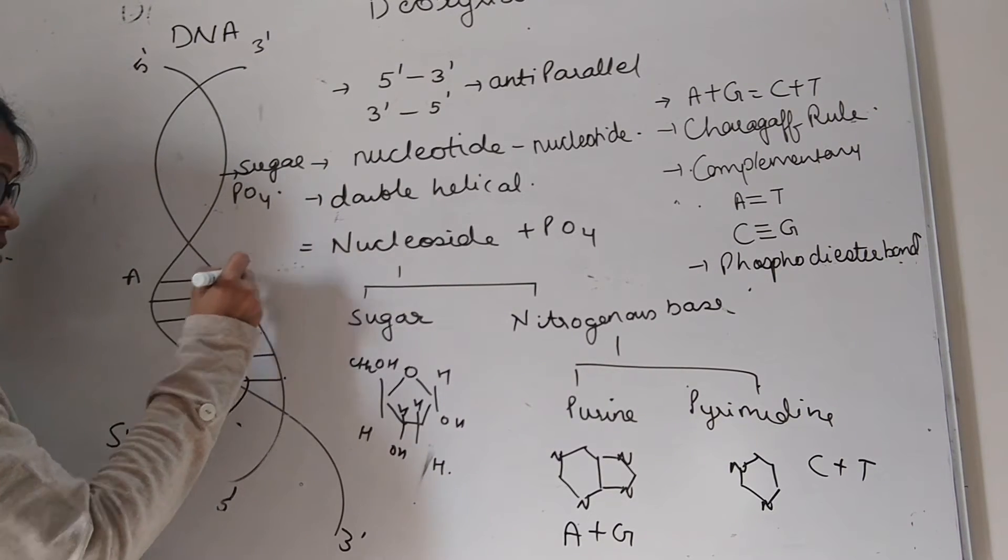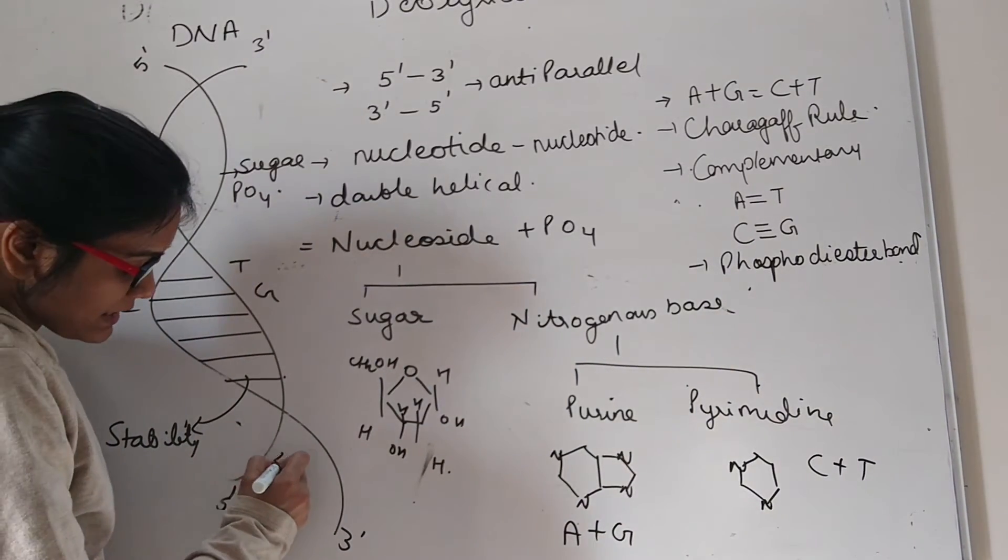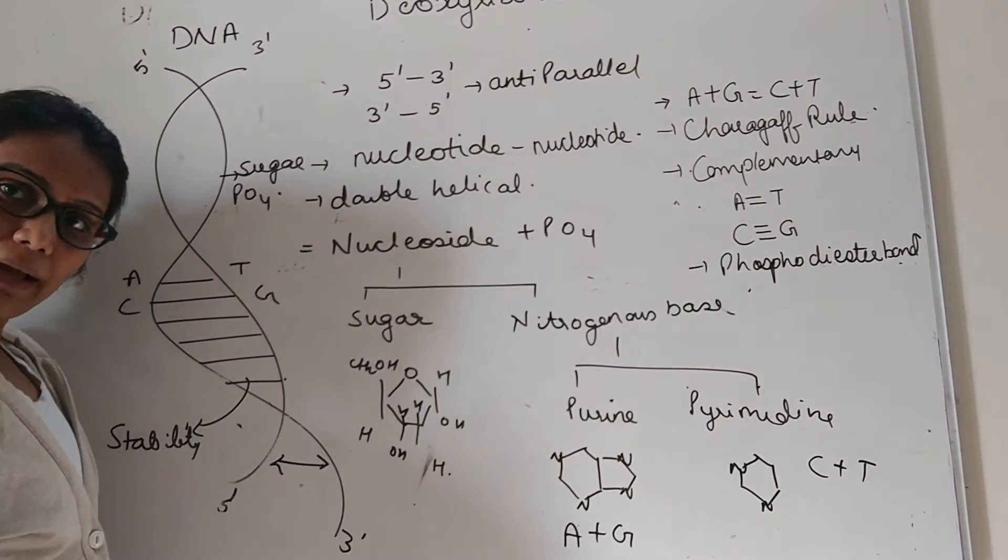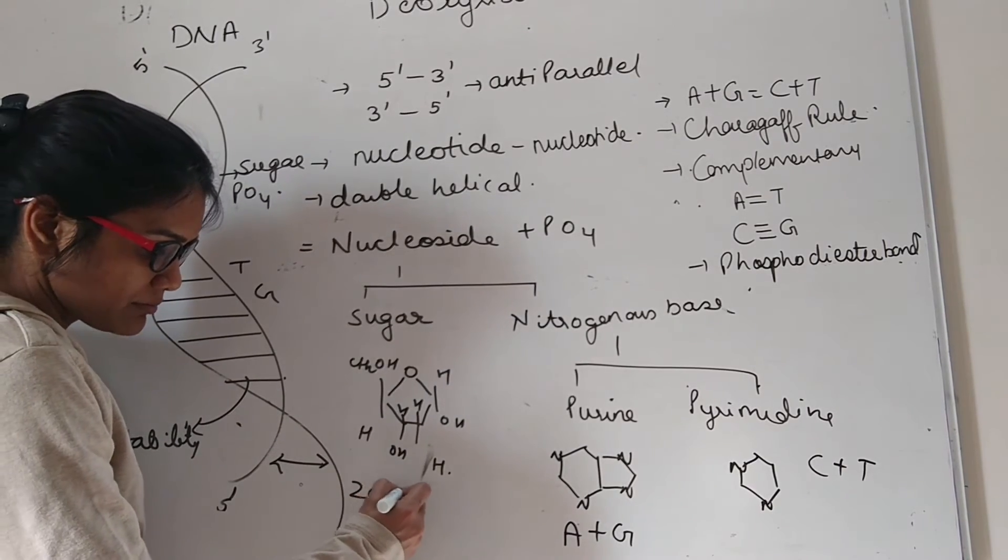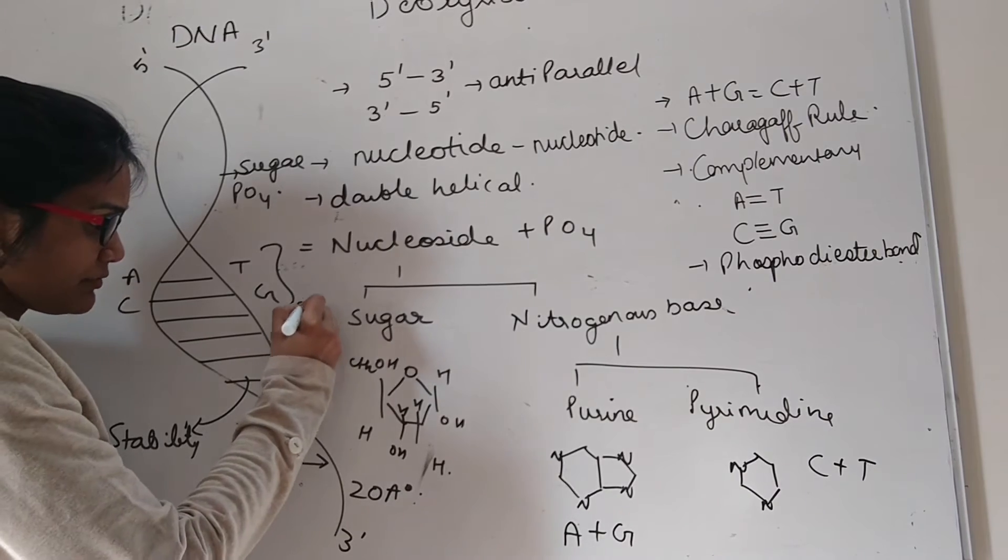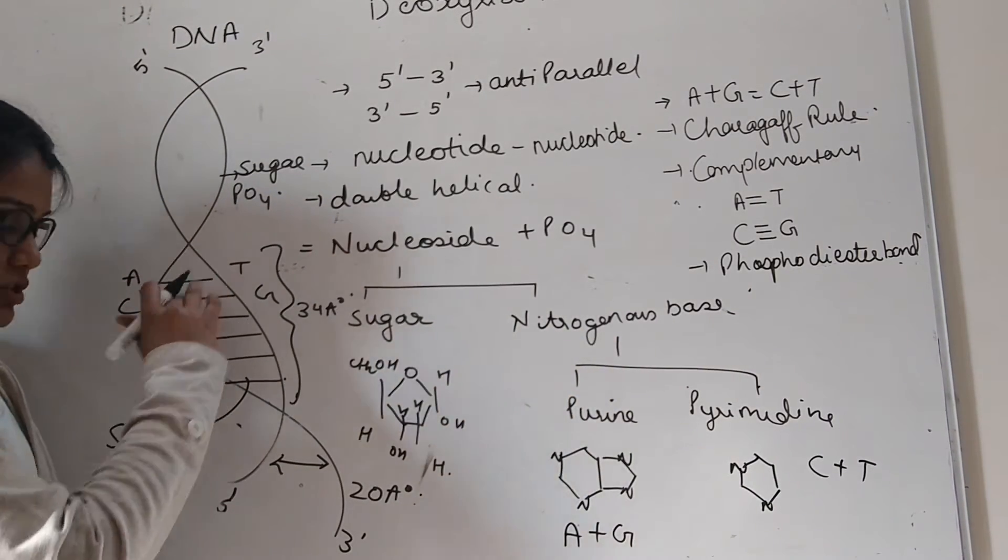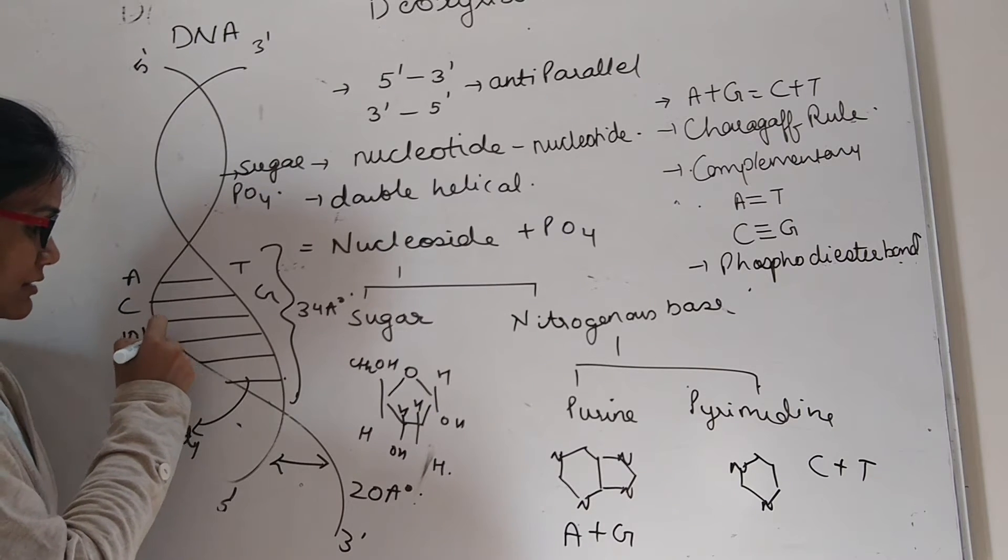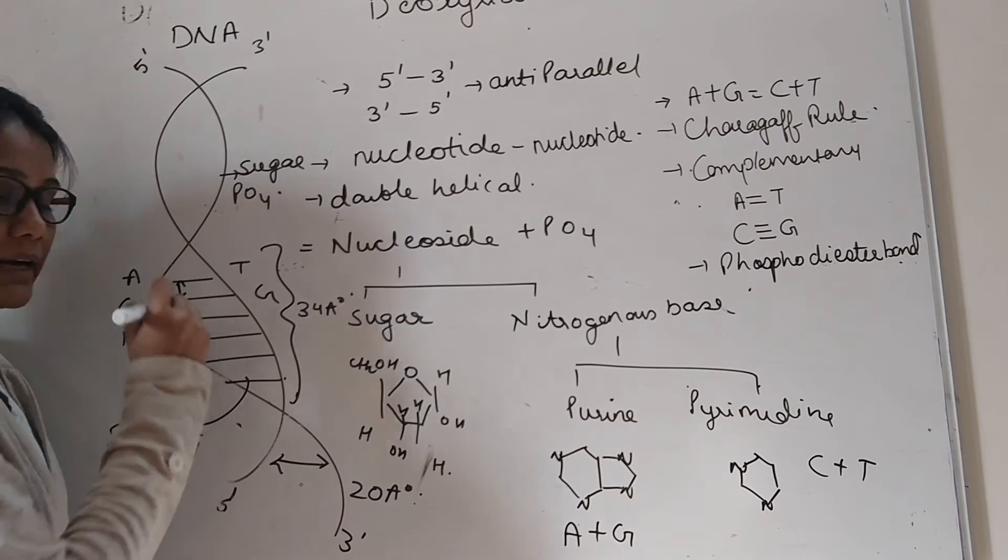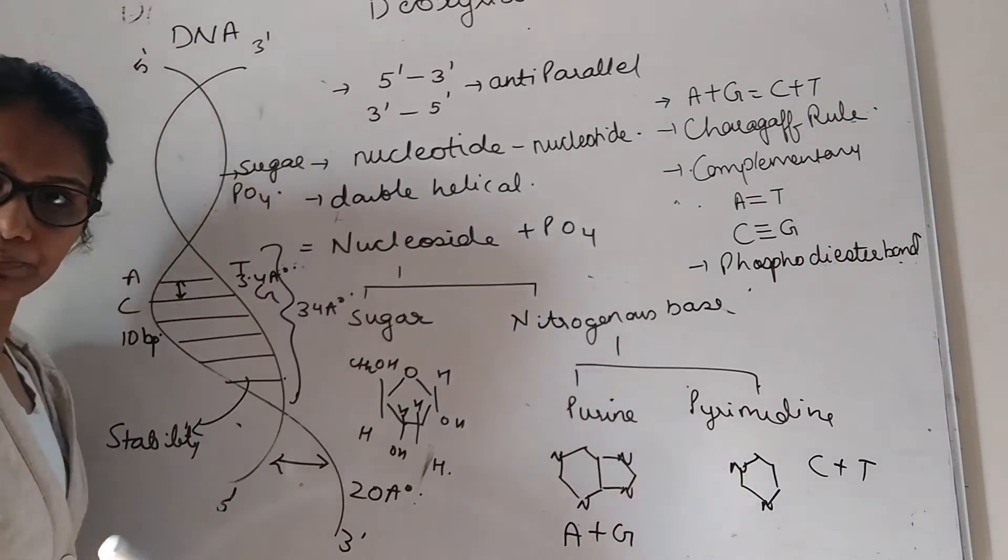A will always bond with T, C will always bond with G. The two strands are separated from each other by a distance of 20 angstroms. And each turn is of 34 angstroms. And how many bases are present in each turn? There are 10 bases. The distance between the two nitrogenous bases will be 3.4 angstroms pitch.